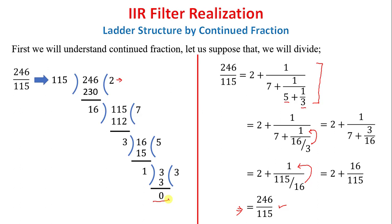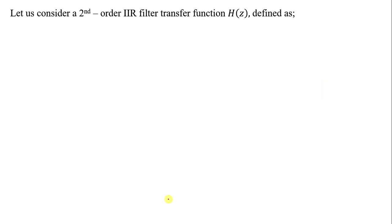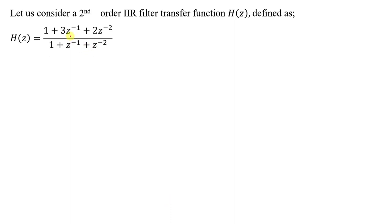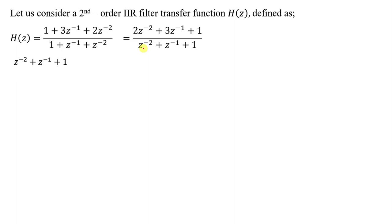Now let's take the example of an IIR filter transfer function. Consider a second-order IIR filter transfer function H(z) defined as: numerator is 1 plus 3z⁻¹ plus 2z⁻² and denominator is 1 plus z⁻¹ plus z⁻². First of all we will write this transfer function in the ascending power of z. In ascending power, you can write numerator and denominator with terms ordered from z⁻² up, then multiply numerator by z to the power minus 2.